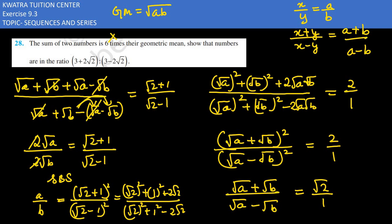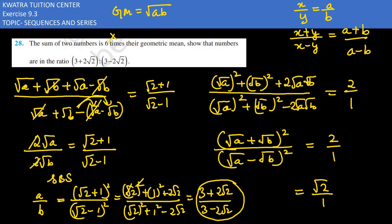Finally your answer is: if we open the square, (√2)² + 1² + 2√2 = 2 + 1 = 3 + 2√2 on top, 3 - 2√2 on bottom. So a/b = (3 + 2√2)/(3 - 2√2). That would be your complete answer.